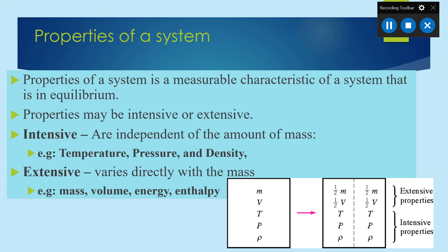When we divide a system into two halves, the mass becomes m/2 and the volume becomes v/2. These properties depend upon the mass of the system — when the mass changes, these properties also change. Those properties — such as mass, volume, energy, and enthalpy — are known as extensive properties. So a system has two types of properties: intensive properties and extensive properties.